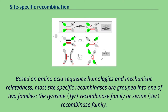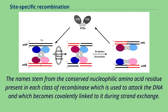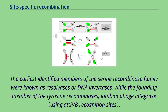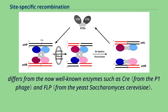Based on amino acid sequence homologies and mechanistic relatedness, most site-specific recombinases are grouped into one of two families: the tyrosine recombinase family or serine recombinase family. The names stem from the conserved nucleophilic amino acid residue present in each class of recombinase, which is used to attack the DNA and which becomes covalently linked to it during strand exchange. The earliest identified members of the serine recombinase family were known as resolvases or DNA invertases, while the founding member of the tyrosine recombinases, lambda phage integrase, differs from the now well-known enzymes such as CRE and FLP.